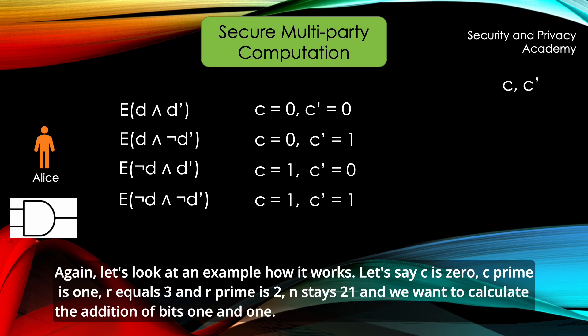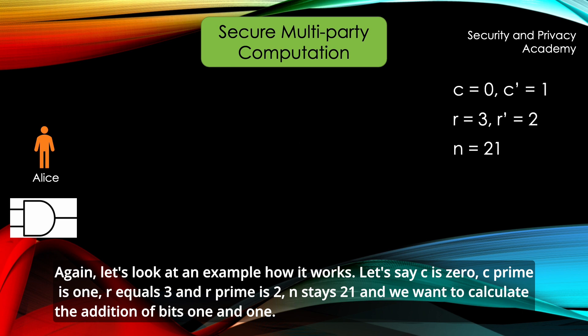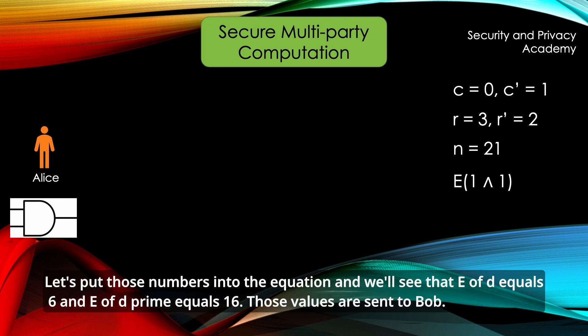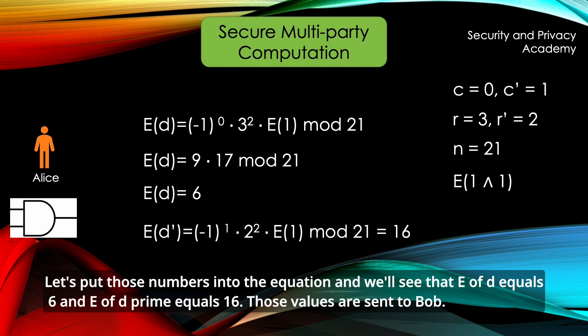Again, let's look at an example how it works. Let's say C is 0, C' is 1, R equals 3 and R' is 2. N stays 21 and we want to calculate the addition of the bits 1 and 1. Let's put those numbers into the equation and we'll see that E equals 6 and E equals 16.